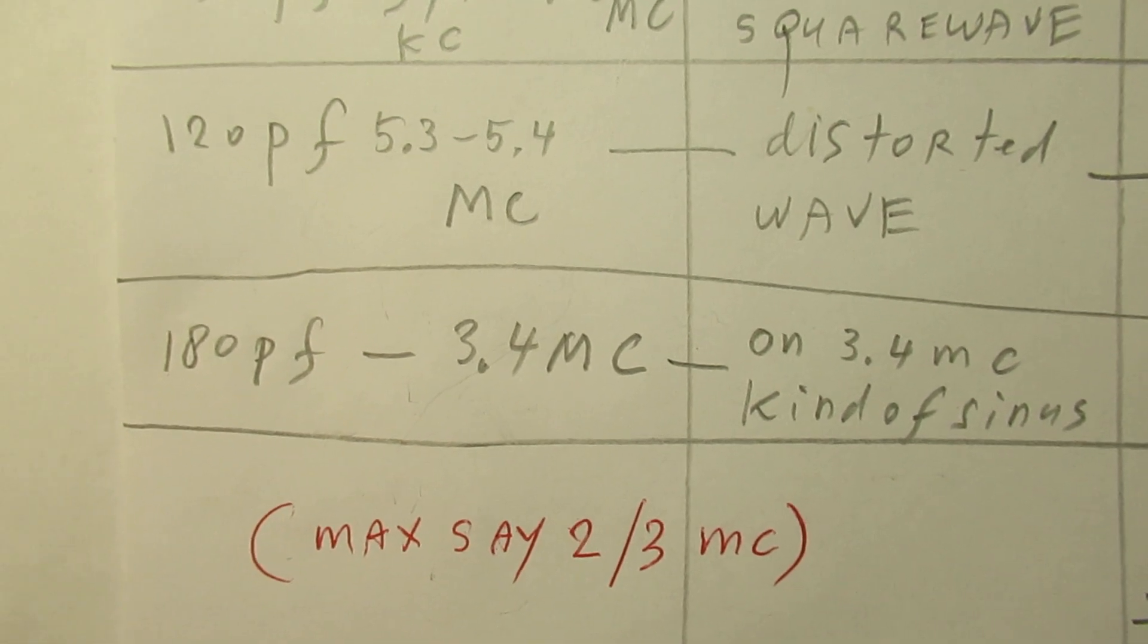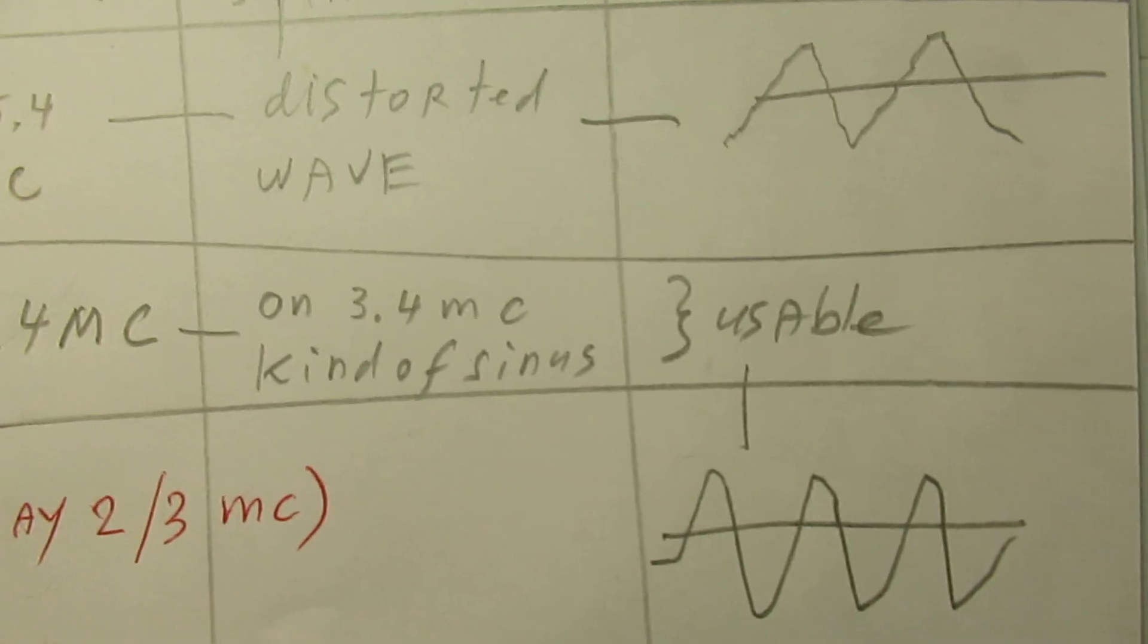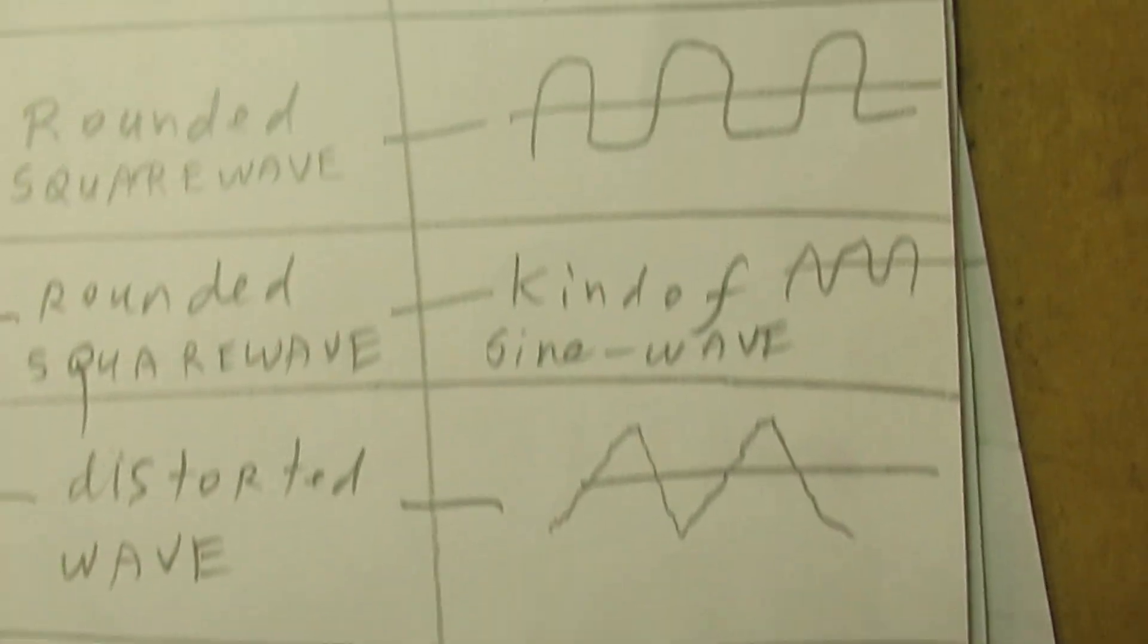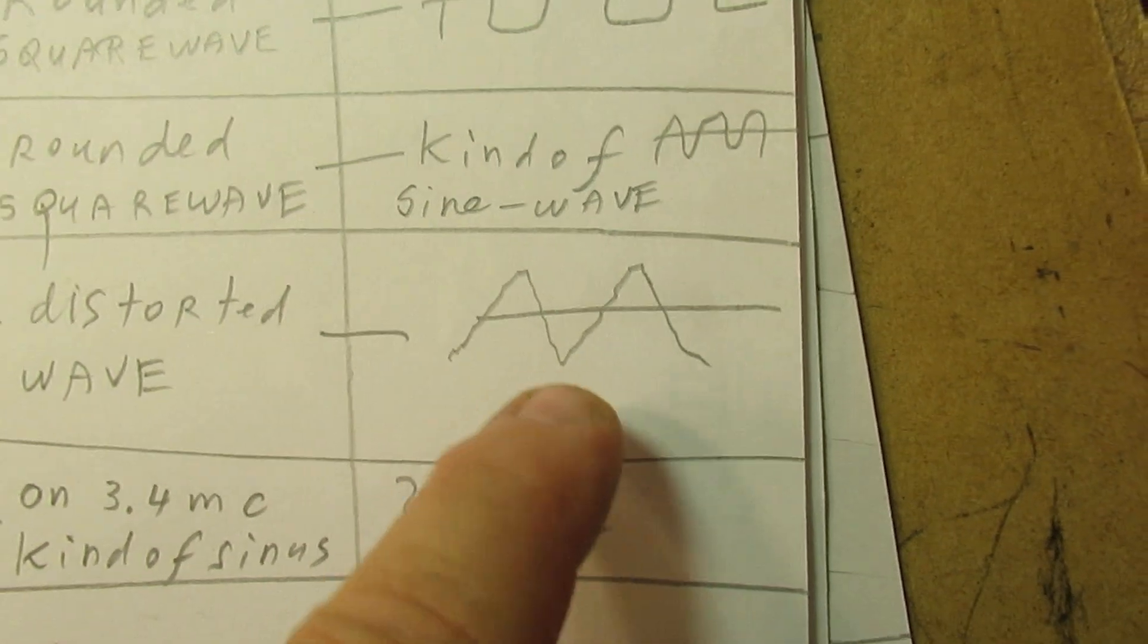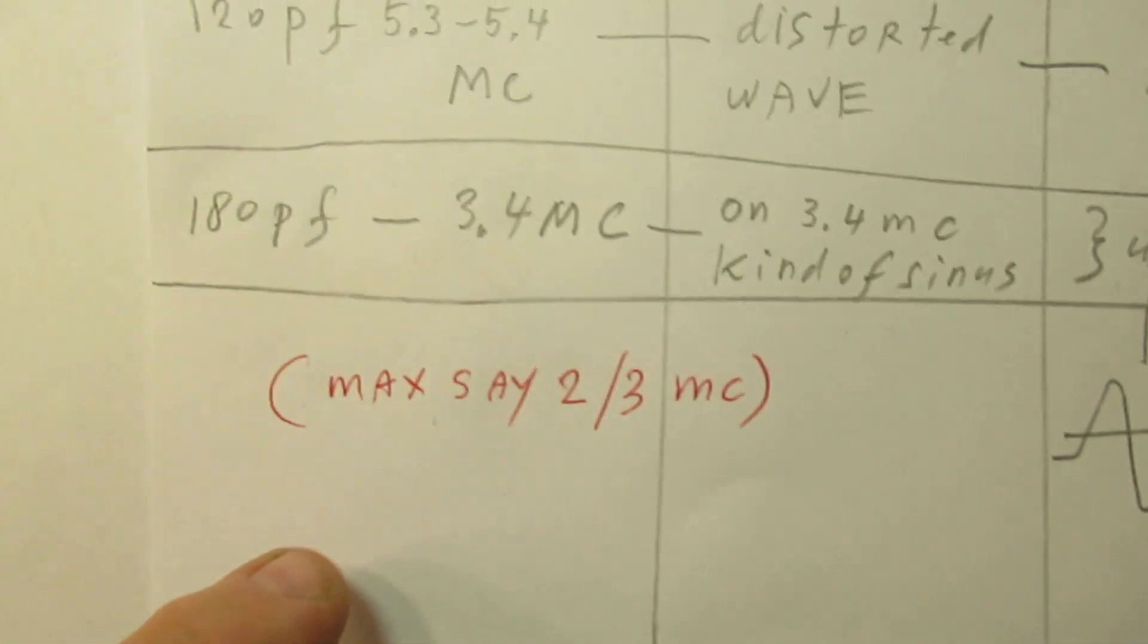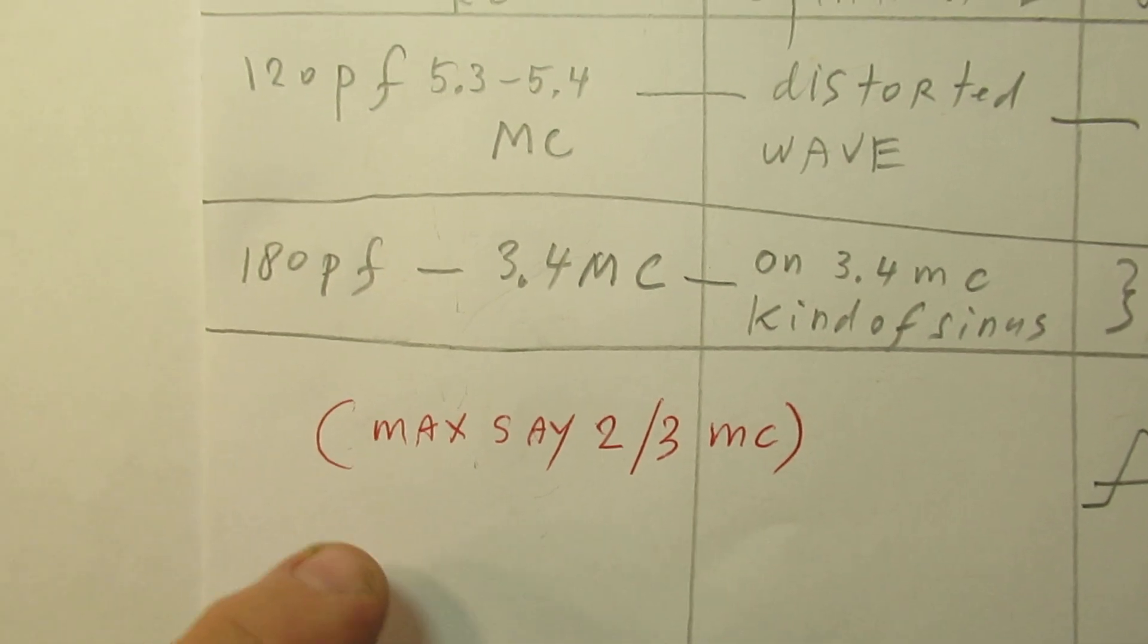The waveform is of course no longer a square wave but perhaps a waveform like this. That maximum frequency where it can give a useful waveform, albeit a kind of sine wave, is 2 megahertz.